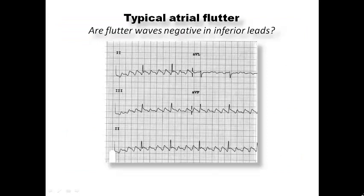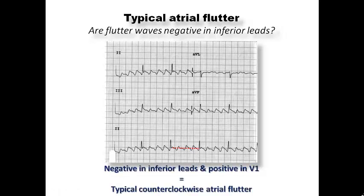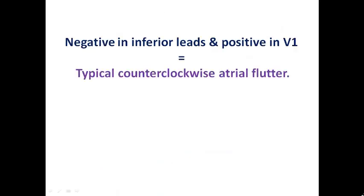To decide whether it is counterclockwise or clockwise atrial flutter, it depends on the polarity of the flutter waves in the inferior leads and V1. If the flutter waves are negative in inferior leads and positive in V1, this represents typical counterclockwise atrial flutter, which is the most common pattern.